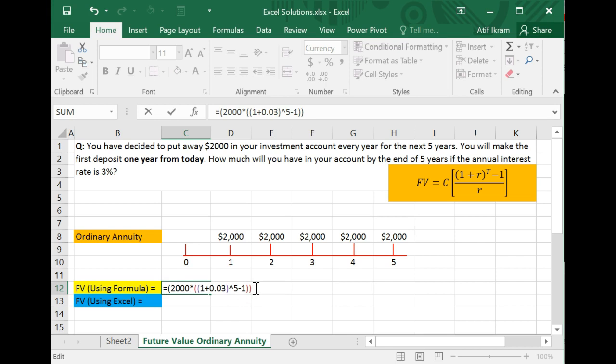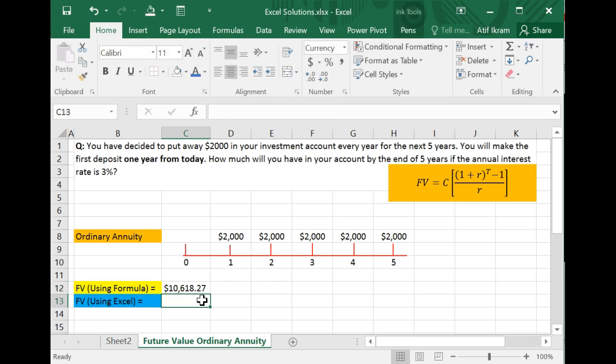I know it's not pretty, but then I'll divide this by r which is 0.03. And so when I do this I get 10,618.27. So this is how much I will have at the end of five years.